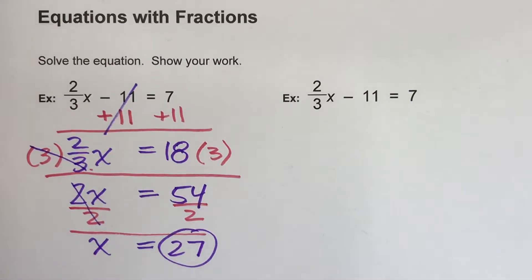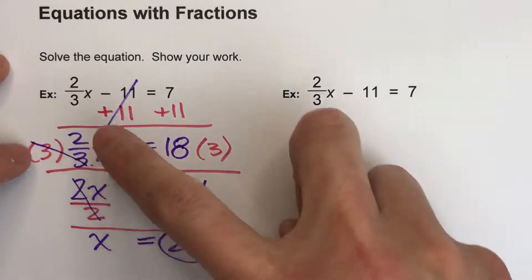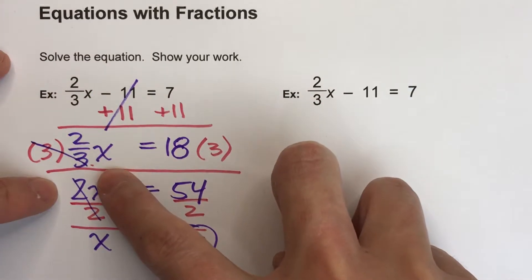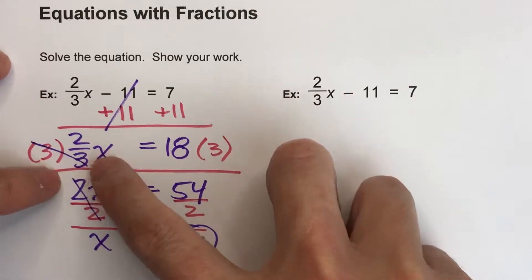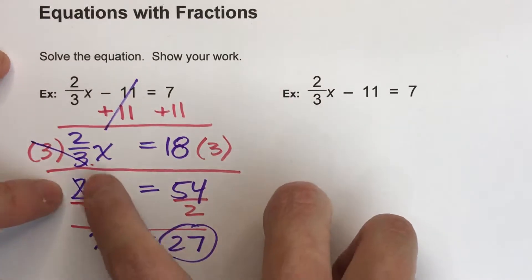So there's an easy way to undo equations with fractions in them. Think of the fraction as two different steps. You've got 2 divided by 3, so we undo the divided by 3, and then we undo the multiplied by 2.